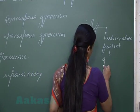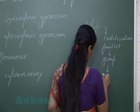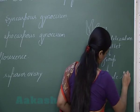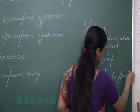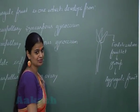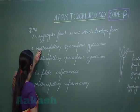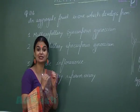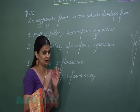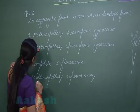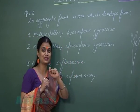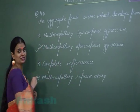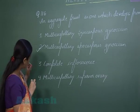Looking at the right option: the first option is multicarpellary and syncarpous gynoecium. Syncarpous means carpels are fused, so this cannot be the correct condition. The correct option is multicarpellary and apocarpous, since apocarpous means carpels are free.